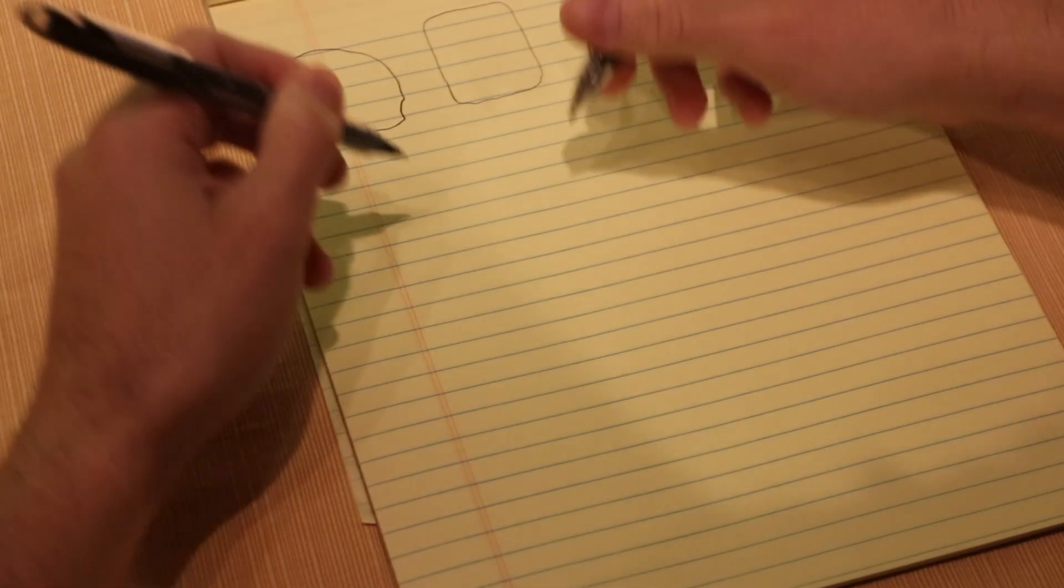Some tasks, however, prove to be a bit tricky. Rubbing our stomach while patting our head is a classic example. Drawing a circle with one hand and a square with the other is almost impossible to do.